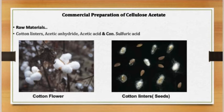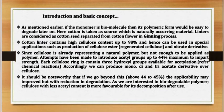You can see some pictures of cotton flower and cotton linters here. Cotton is taken as a source, which is a naturally occurring material. Linters are considered as cotton seeds separated from the cotton flower in the ginning process. Cotton linters contain high cellulose content up to 98% and hence can be used in special applications such as production of cellulose ester, regenerated cellulose, and nitrative derivatives.